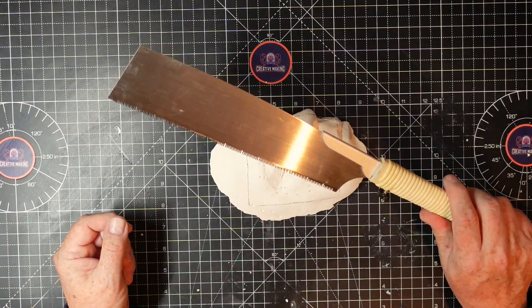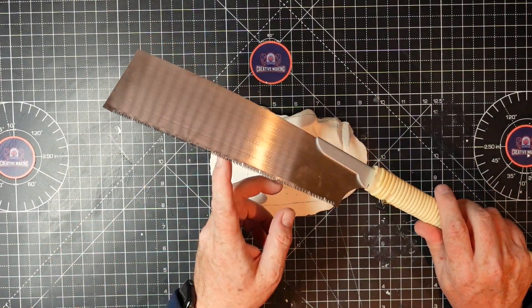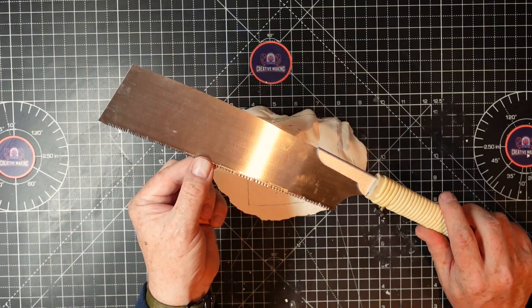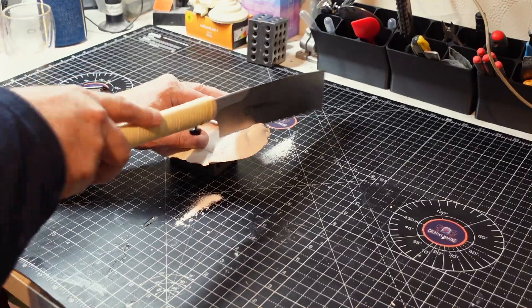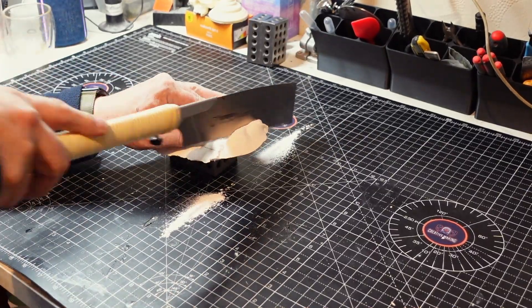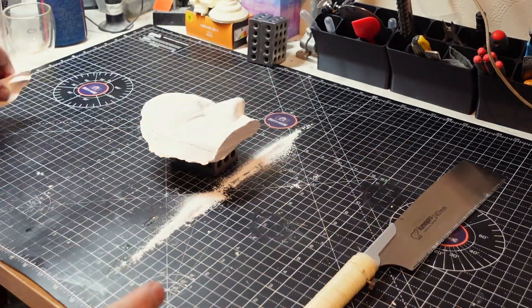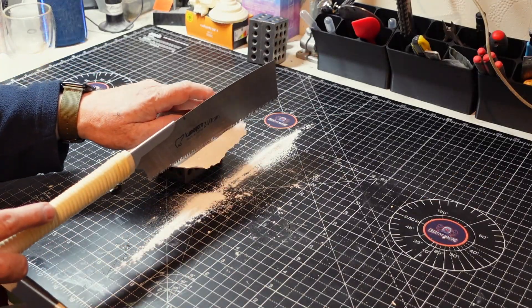So to cut this I'm using one of these fancy Japanese saws. These things are super sharp and they cut on the pull, so if you're going to use one just be super careful. We're literally just going to slowly cut through there as neat and straight as possible.